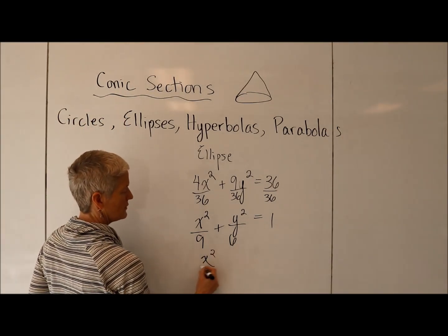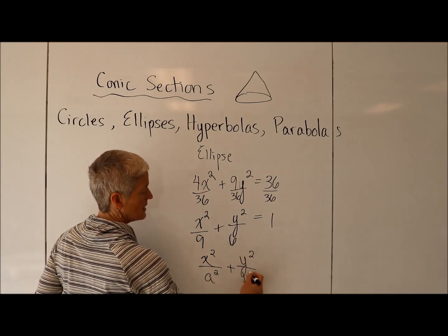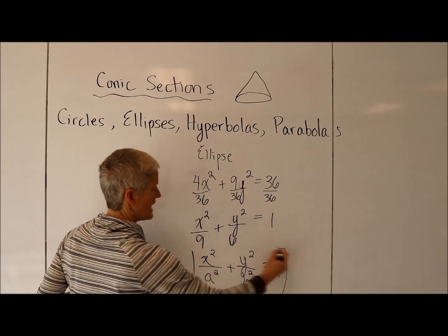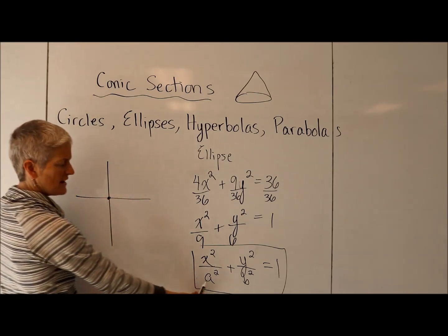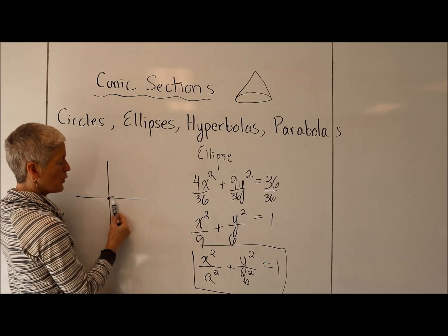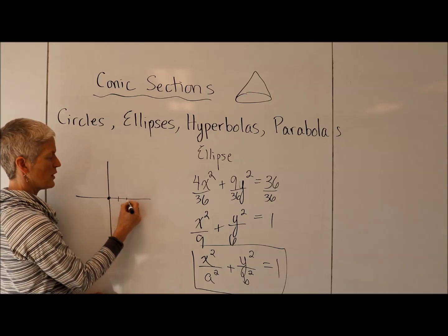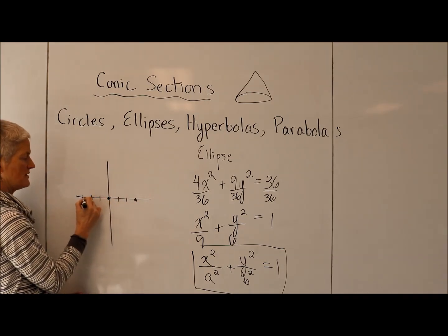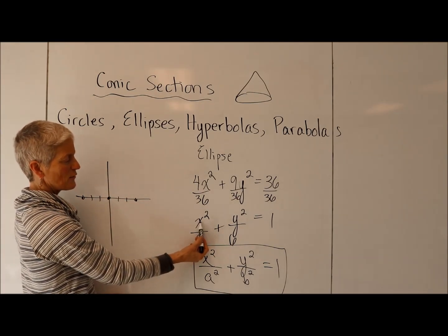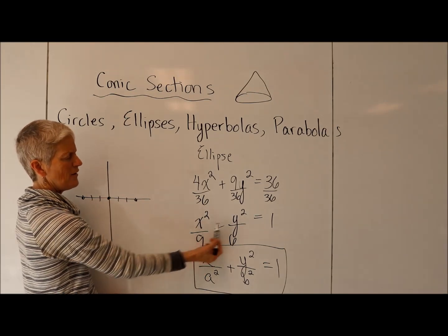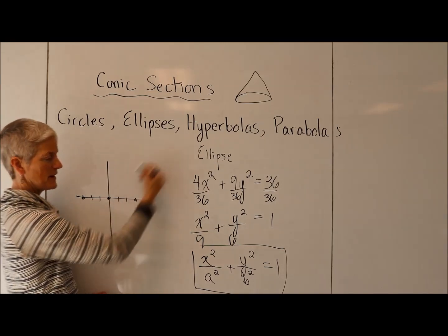This is the classic form of an ellipse centered at the origin. I'm centered at the origin. A is the amount that I go to the right and to the left from the center of my ellipse. In this case, my A is 3, so I'm going to go 3 to the right and 3 to the left. Those are points that will be on my ellipse. You can check that — 3 squared is 9, 9 divided by 9 is 1, and that would have to be 0. Same thing if I plugged in a negative 3.